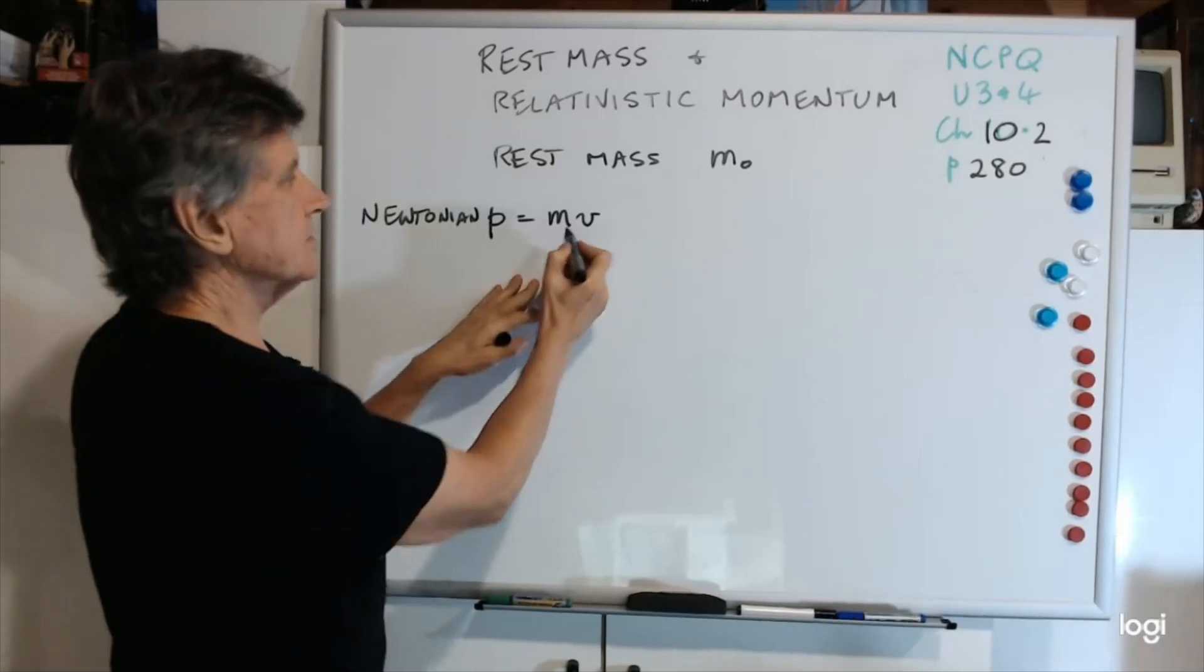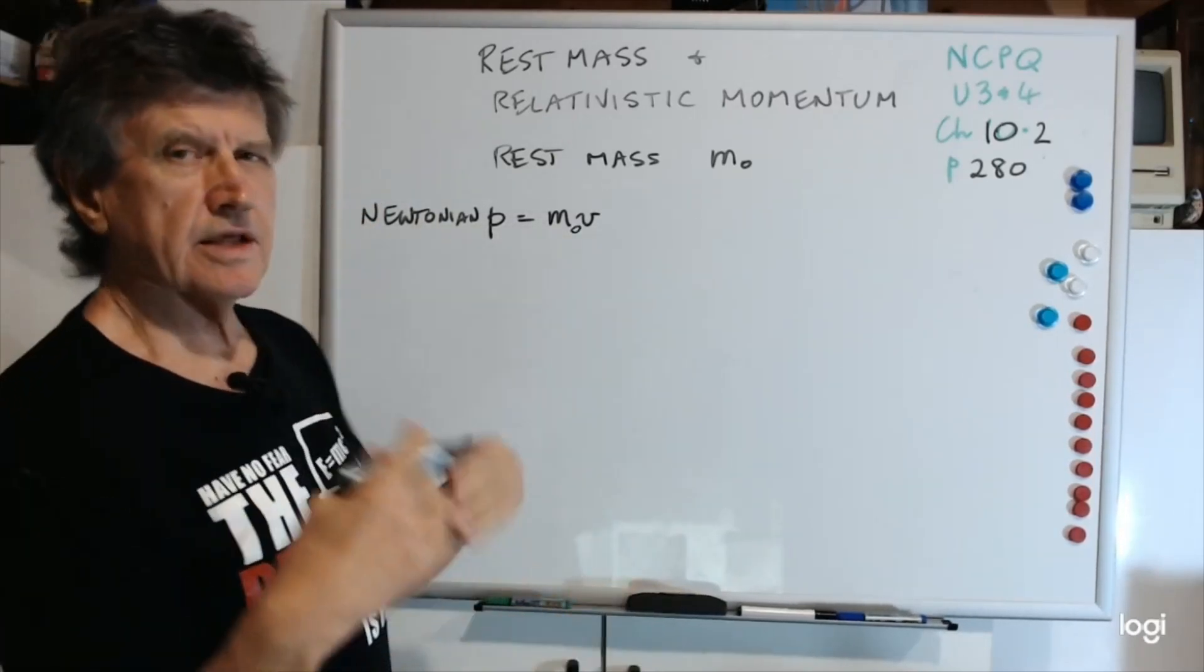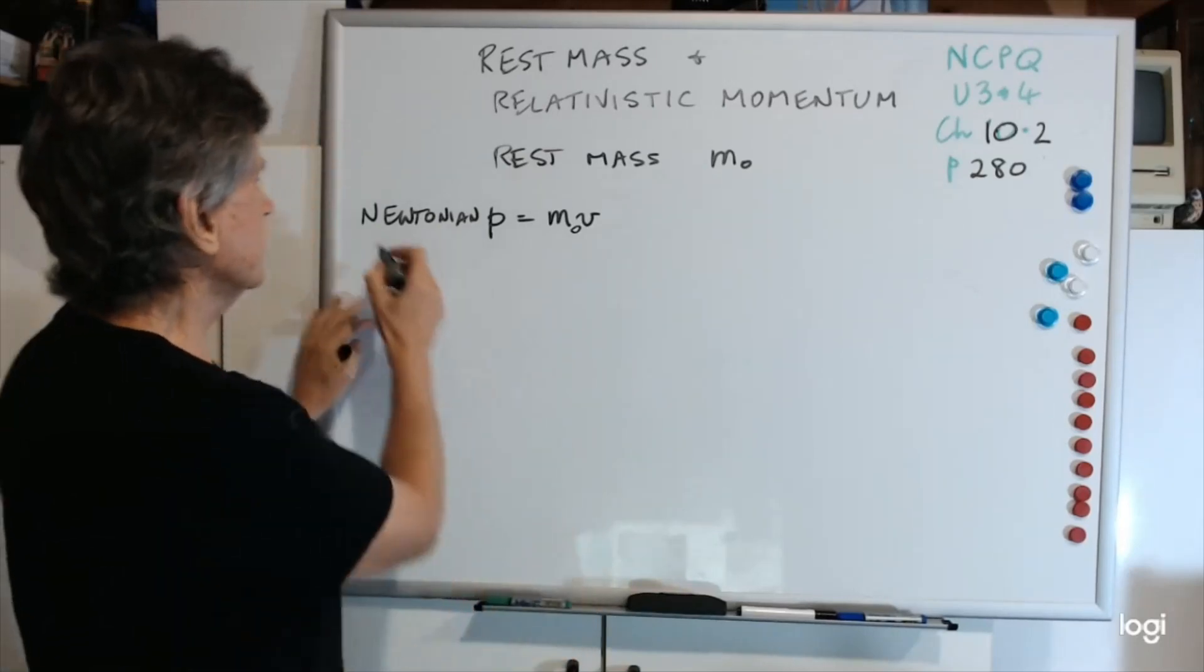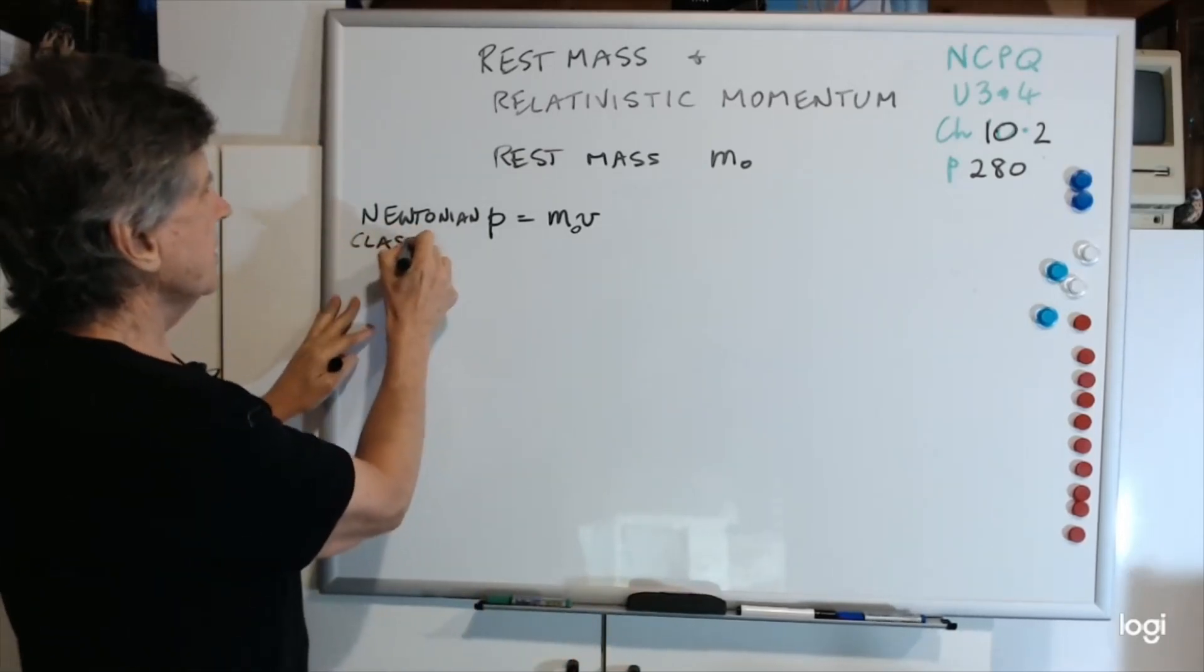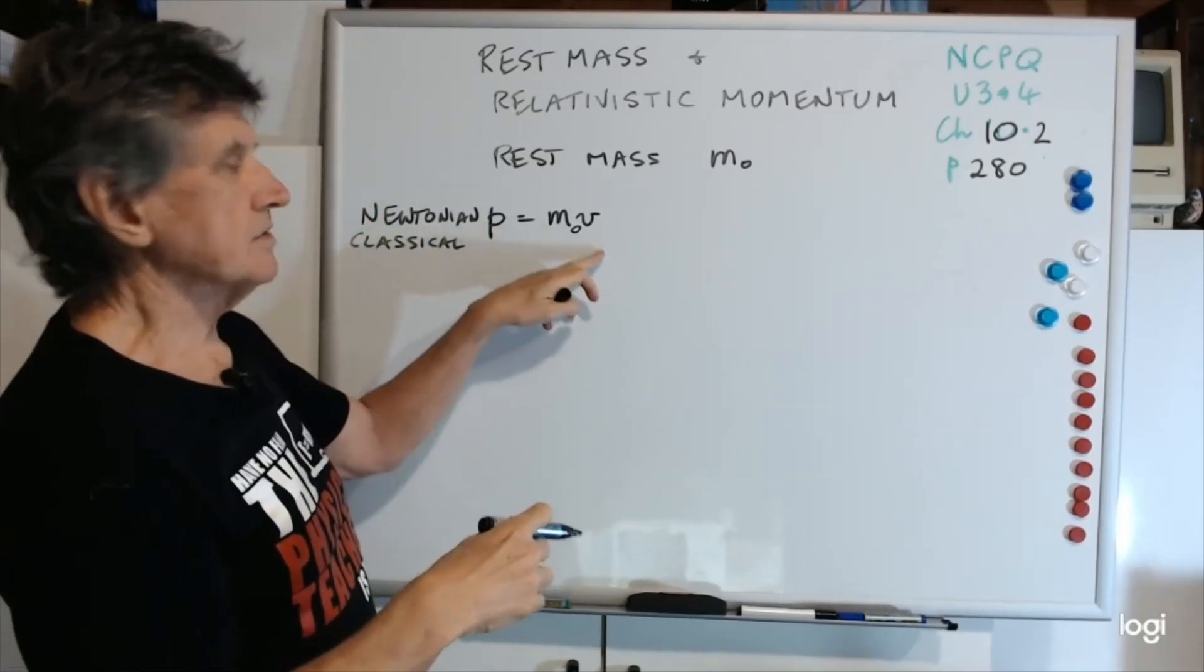So Newtonian momentum is just mv. Now we might as well stick a zero in there, because it's the same thing. So that's Newtonian. The other word for it you'll often see is classical. So classical momentum and Newtonian momentum are just p equals m0v.